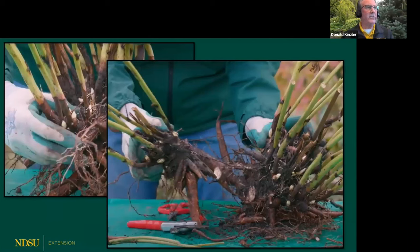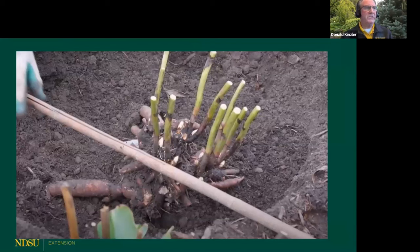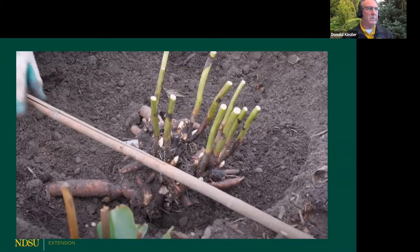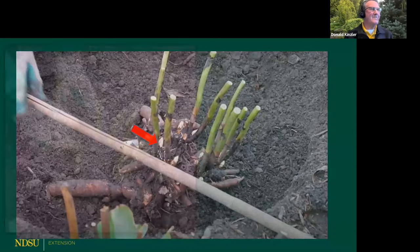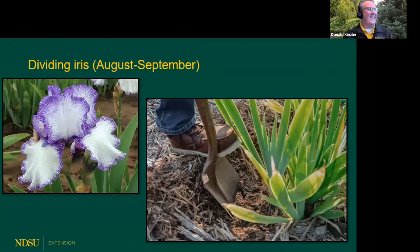Each peony division should have about four or five good eyes — those whitish-pink buds. With most perennials, reset the clump at the same depth it was growing. Peonies are very particular: the uppermost bud or eye needs to be no deeper than an inch and a half below the soil surface. We use a stake across the top to gauge this depth. After planting, water all divided perennials in thoroughly to get good soil-to-root contact.